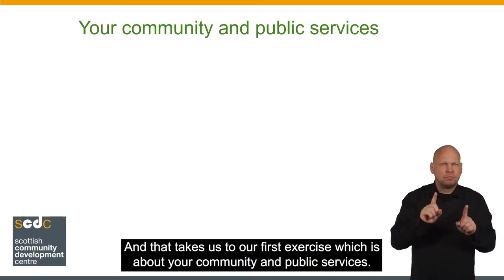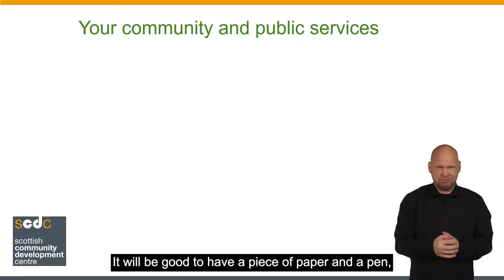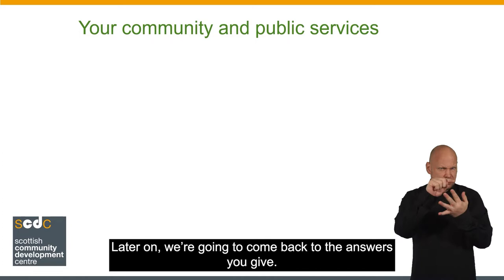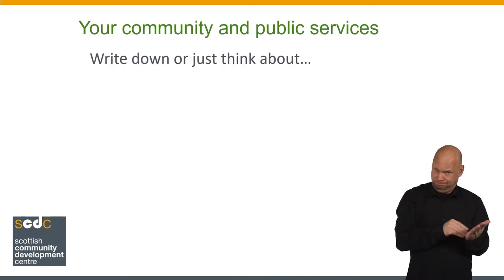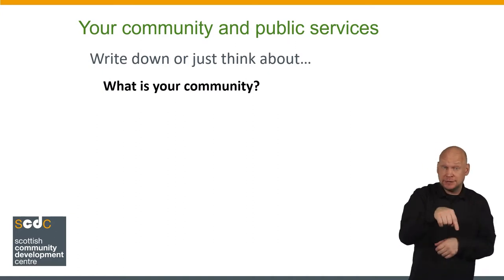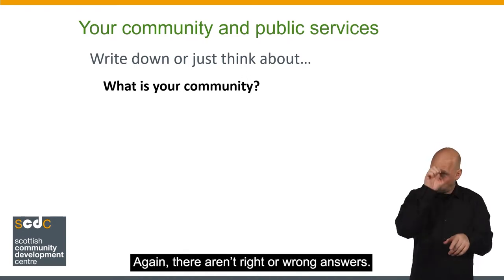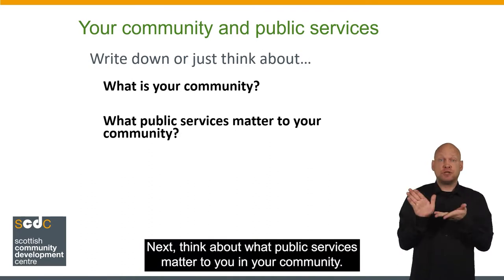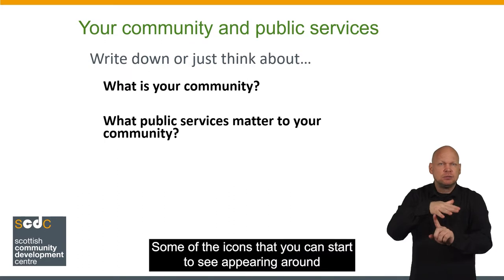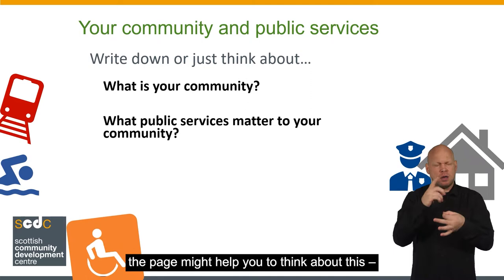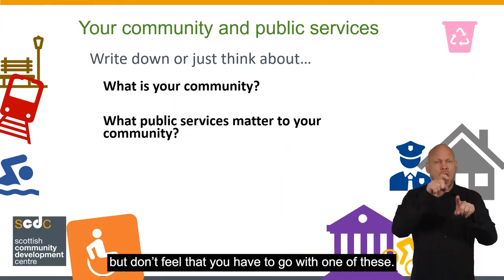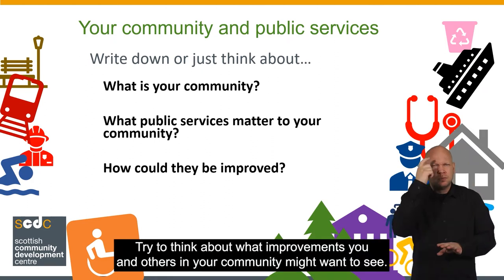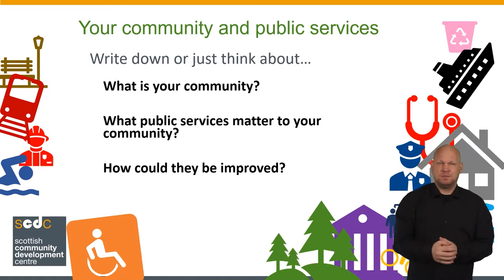And that takes us to our first exercise, which is about your community and public services. It will be good to have a piece of paper and a pen or another way of putting down your thoughts. Later on, we're going to come back to the answers you give. So write down or just have a think about: what is your community? Is it a place or is it a group of people with things in common? There aren't right or wrong answers — you may even think of more than one community that you are part of. Next, think about what public services matter to you in your community. Some icons appearing around the page might help you to think about this, but don't feel that you have to go with one of these. Finally, what improvements would you like to see to these services? Try to think about what improvements you and others in your community might want to see, and save these thoughts for later.